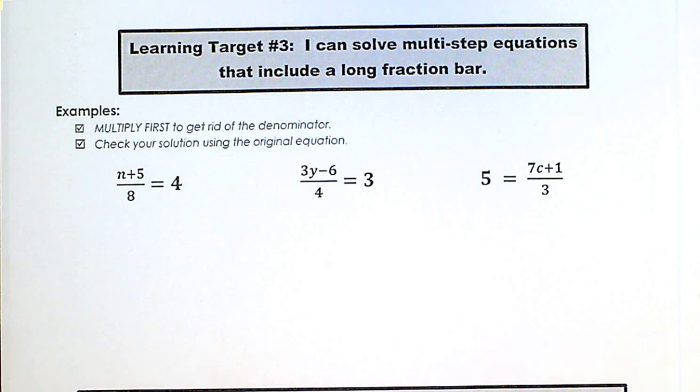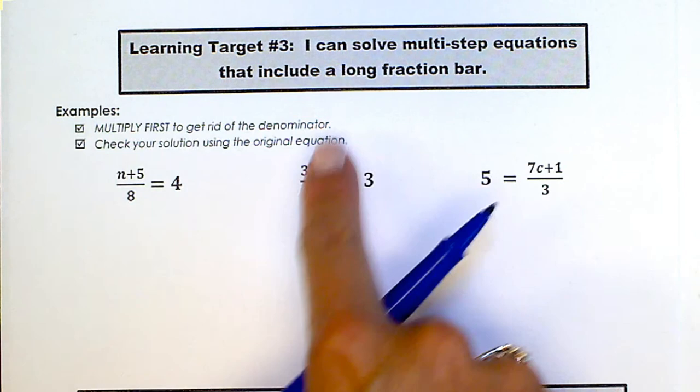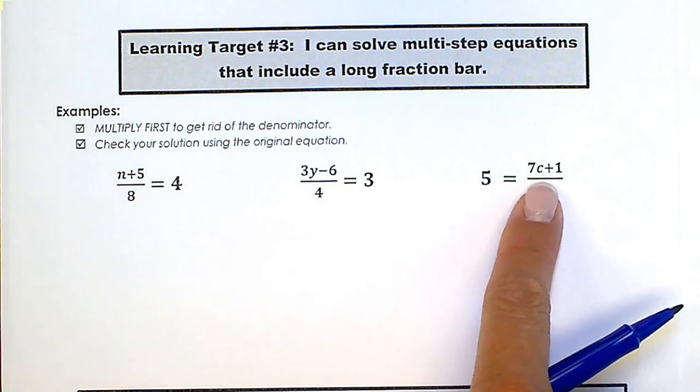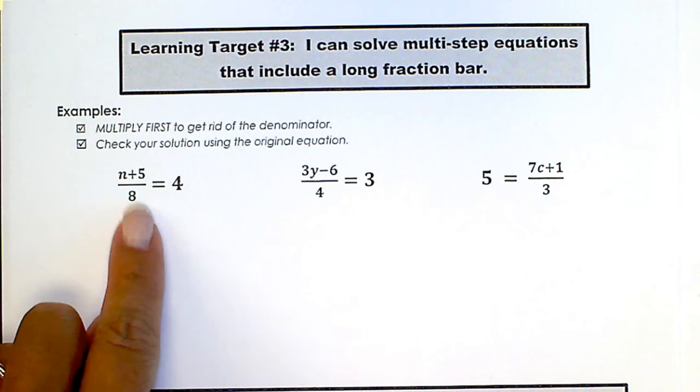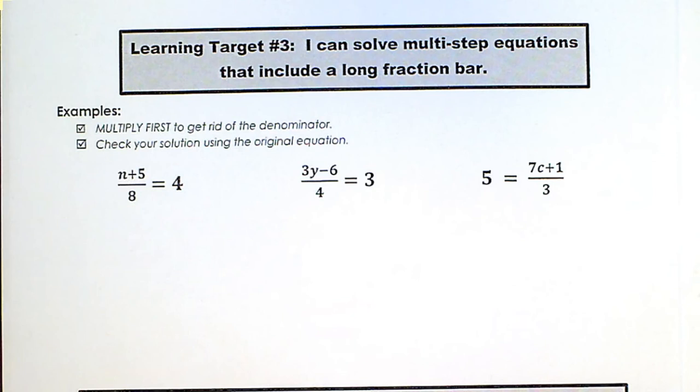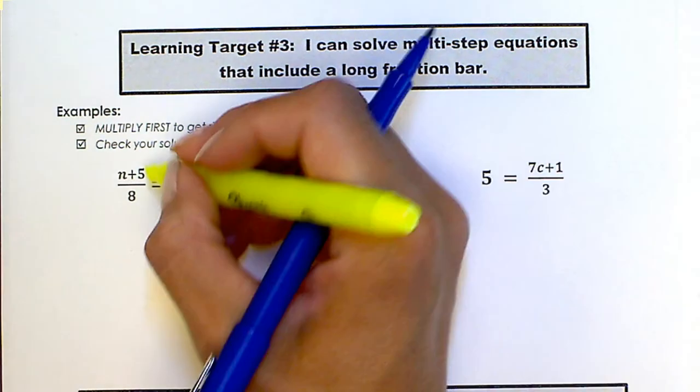Now we're going to be looking at how to solve multi-step equations that include a long fraction bar. So the first step is to get rid of this 8 down here. This is like dividing everything on top by 8, and the opposite operation of that is to multiply both sides by 8.